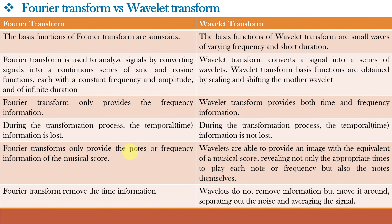Fourier Transform only provides the notes or frequency information of a musical score. For example, the Fourier Transform of musical notes Sa Re Ga Ma Pa Dha Ni will be similar to the Fourier Transform of musical notes rearranged differently. That means the Fourier Transform of both these differently sounding waveforms will be exactly identical, because the notes are sung at different times but the frequency content in both are the same. This means that in computing the Fourier Transform, the time information is lost.